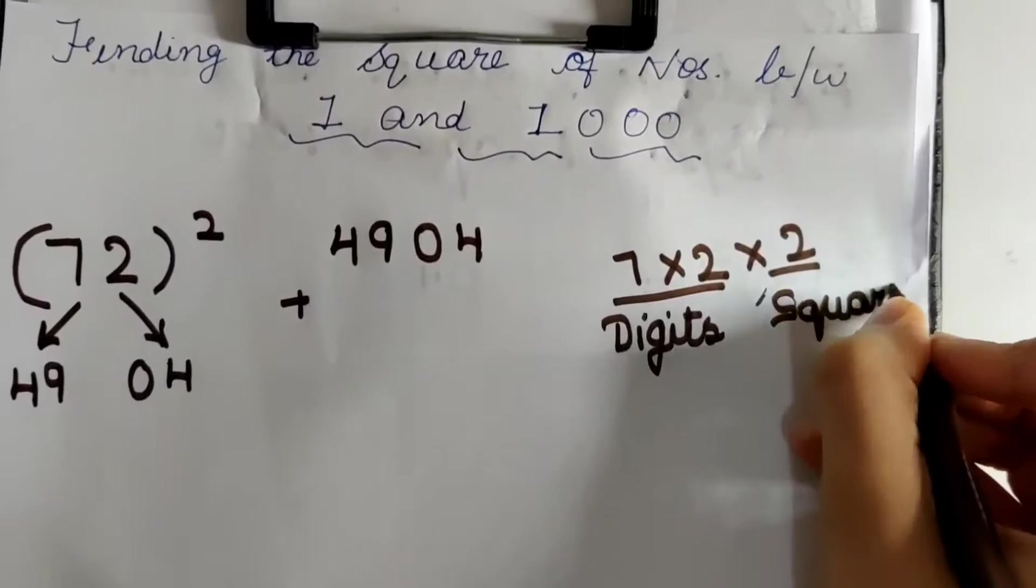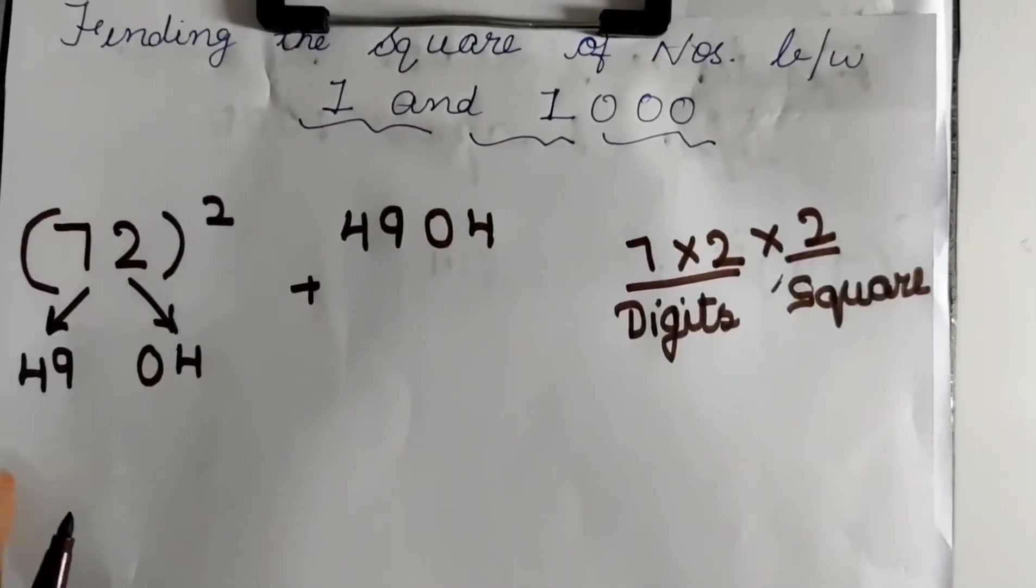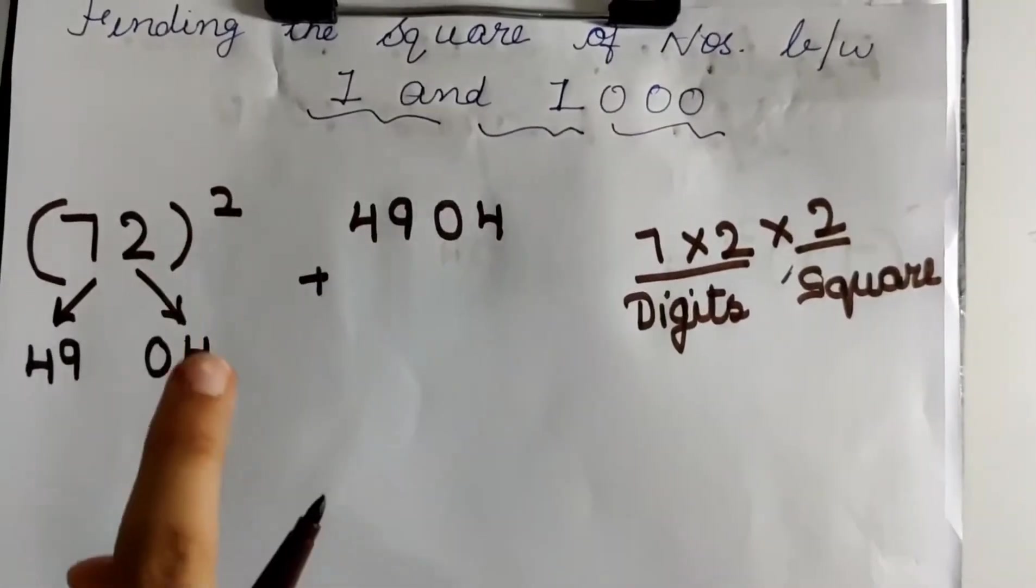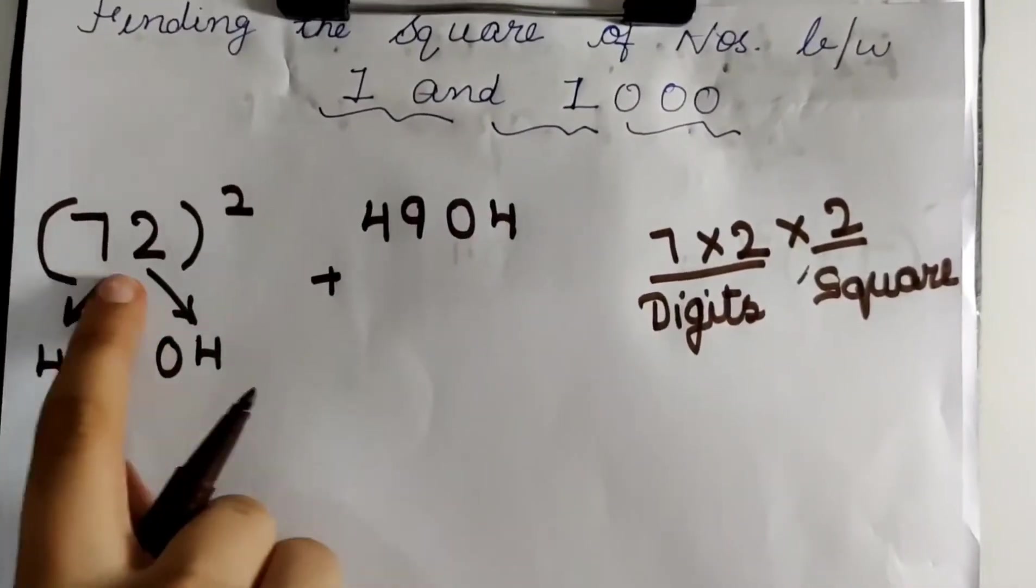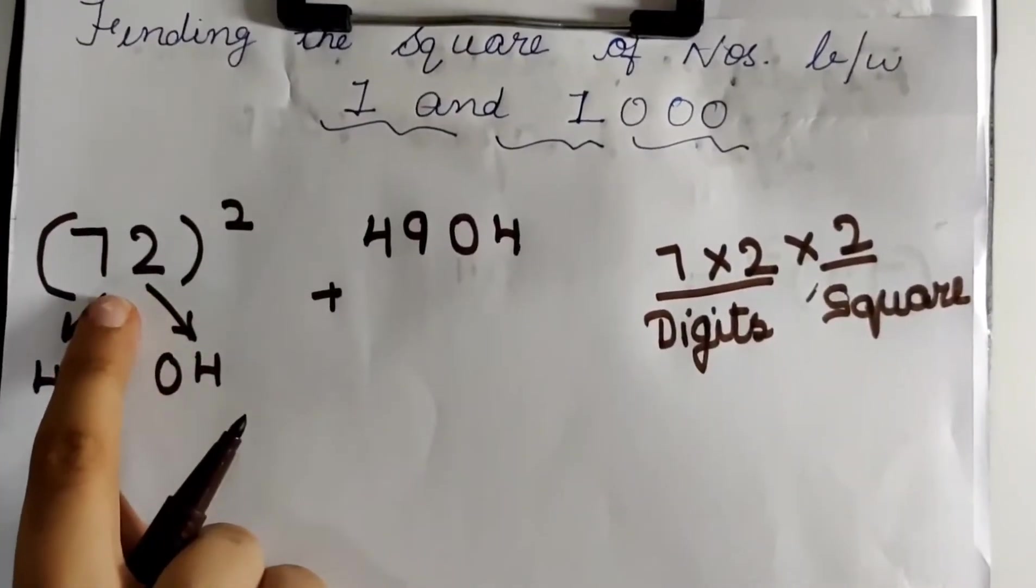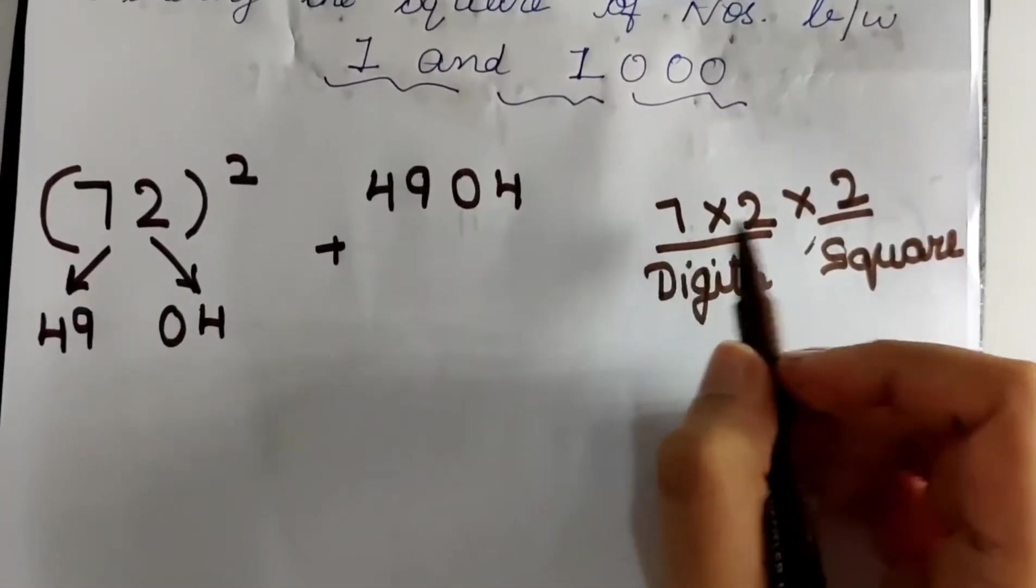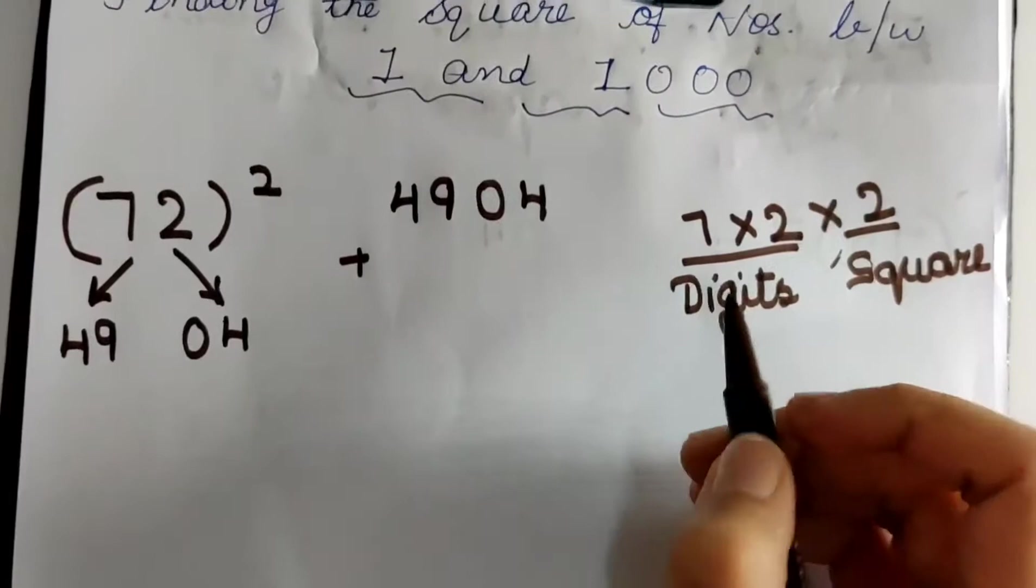Whenever you want to find the square of any number, step 1 is to find the square of the digits. Then you write it like this. Then what you have to do is multiply the digits together and then multiply that with the square. After multiplying the digits with the square, we get 28.